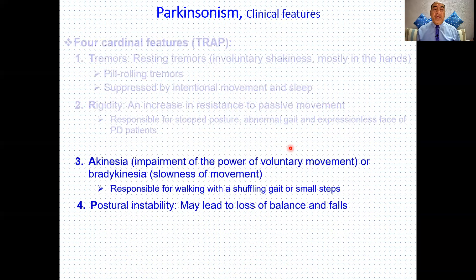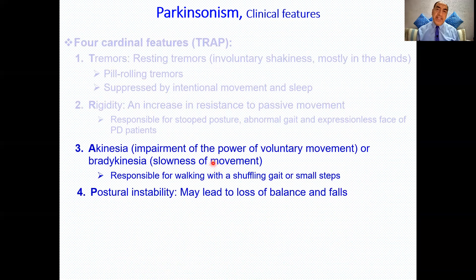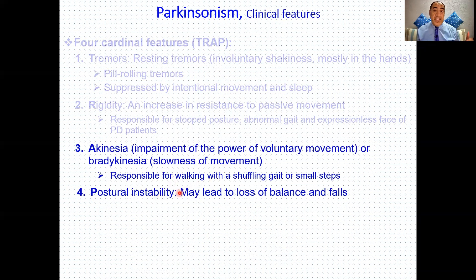The third clinical feature is akinesia or bradykinesia. Akinesia is impairment of the power of voluntary movement, and bradykinesia is slow movement. This is responsible for walking with a shuffling gait and small steps. As the disease progresses, the late features include postural instability, which may lead to loss of balance and falling.